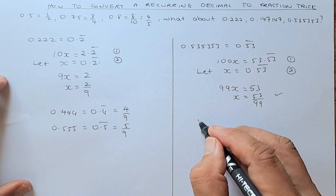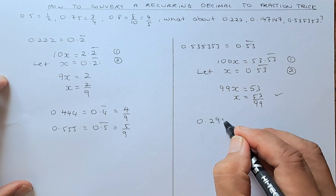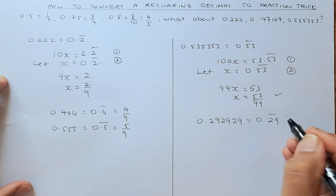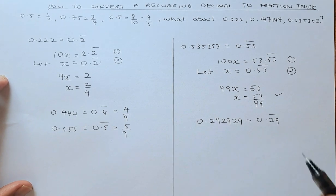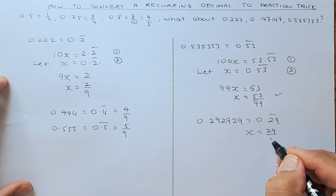So similarly, if you have a number like 0.292929, and you have written them as 0.29 recurring, the fraction is going to be 29 over 99.